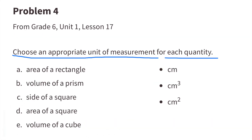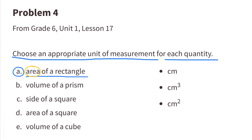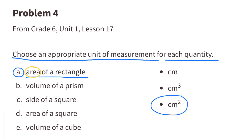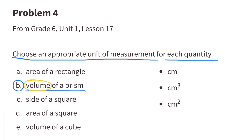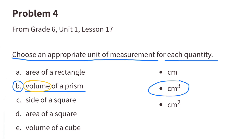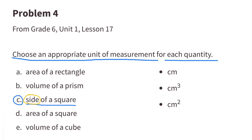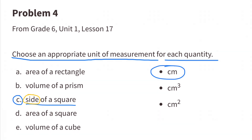Number 4: Choose an appropriate unit of measurement for each quantity. Part A: Area of a rectangle. Area is base times height — 2 dimensions — so we use centimeters to the 2nd power. Part B: Volume of a prism. Volume is 3 dimensional: width times length times height, so centimeters to the 3rd power, or centimeters cubed. Part C: Side of a square. We're talking about one side length — one dimension — so that would be centimeters.